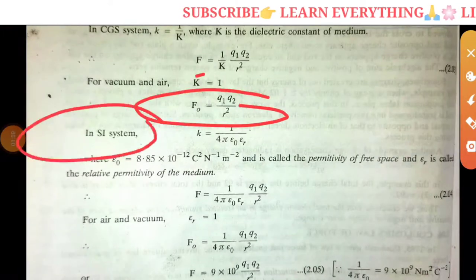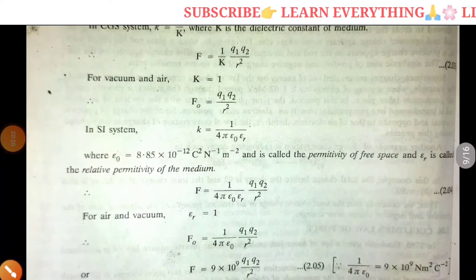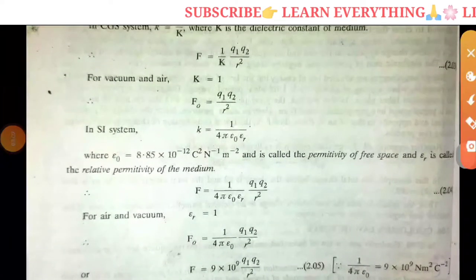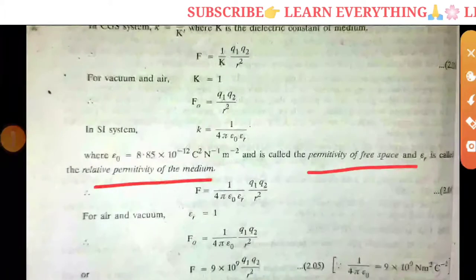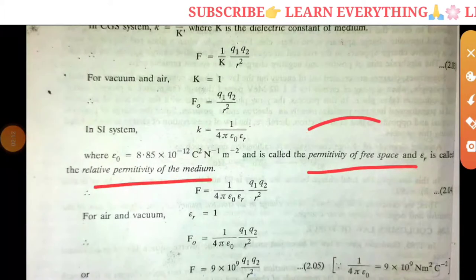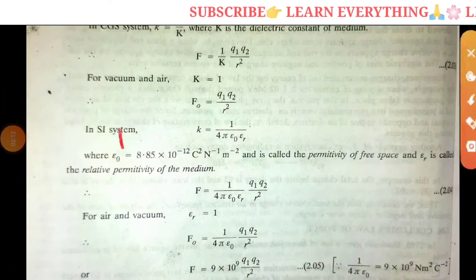But in the case of SI system, K is 1 over 4 pi epsilon_0 epsilon_r, where epsilon_0 is the permittivity of free space and epsilon_r is the relative permittivity of that medium.